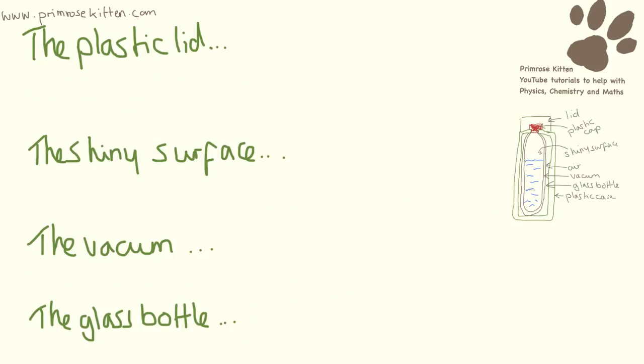I think the best way to approach this is to write several sentences, each addressing a specific design feature. So here I have just picked the plastic lid, the shiny surface, the vacuum, and the glass bottle. There are so many things you could talk about in this question. All of them are structured in the same way - these are just four I have picked as examples.